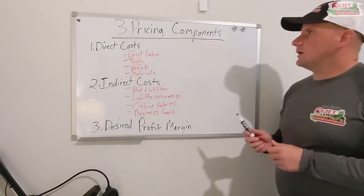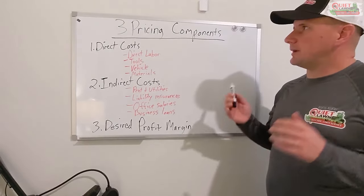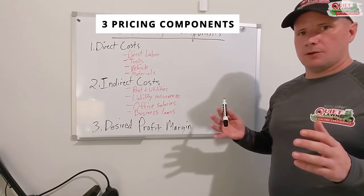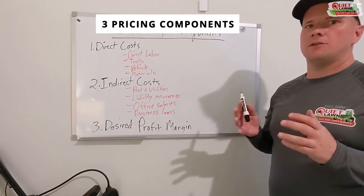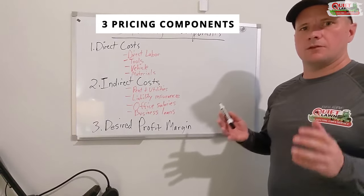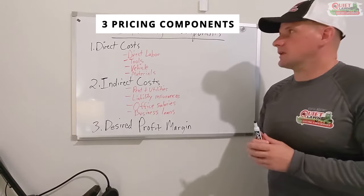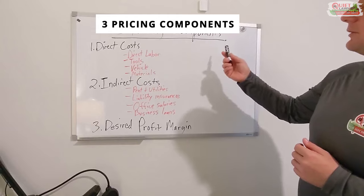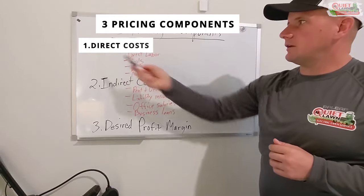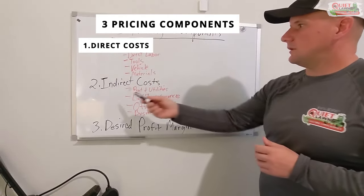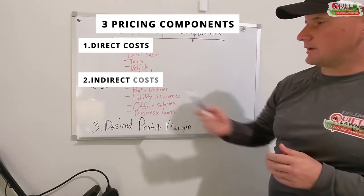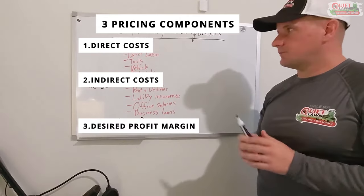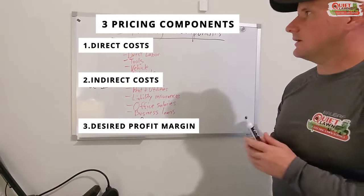So when you're pricing, there's basically three components that you need to calculate in order to figure your pricing. And those three components are your direct cost, your indirect cost, and then your desired profit margin. That's it.